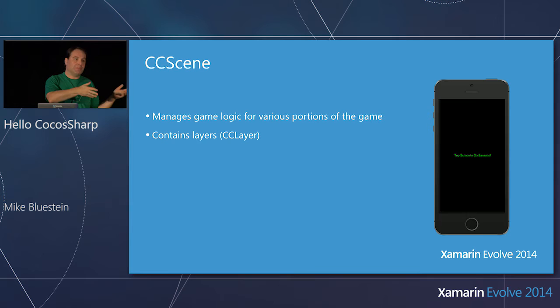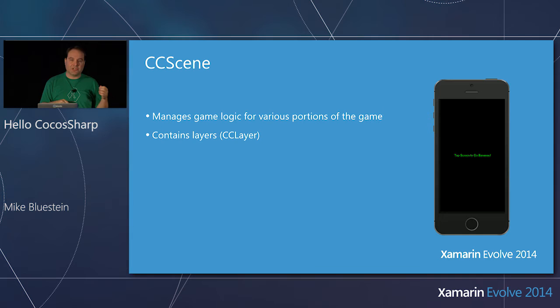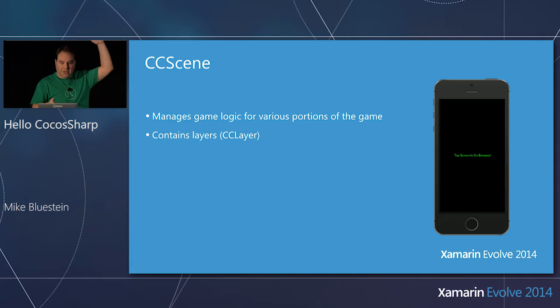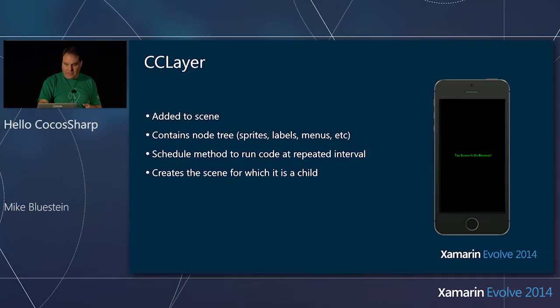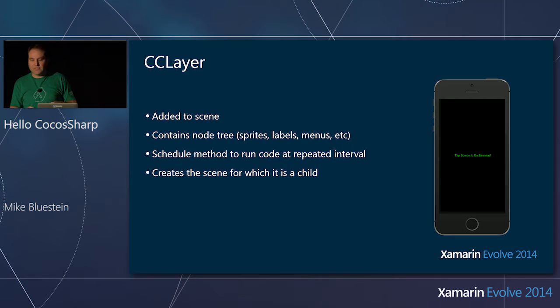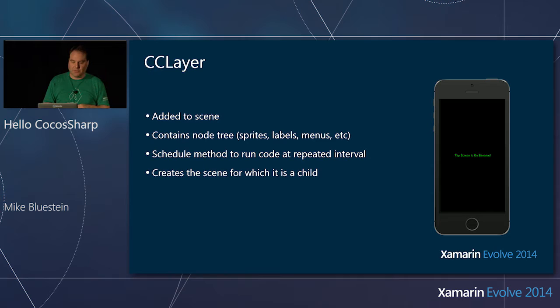To recap: we have an application that starts the game, sets up the app delegate to manage callbacks like going into the background and foreground, and a little initialization such as setting the content. It uses the Director to load a scene. The scene is a level that contains the information about what you're going to see on the screen — built up in a CC Layer class, where you build the node hierarchy.